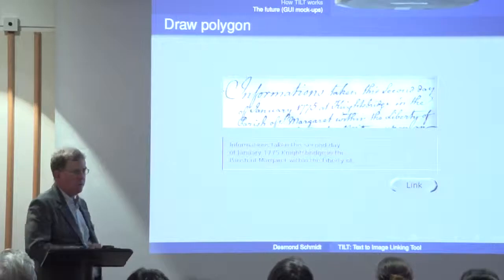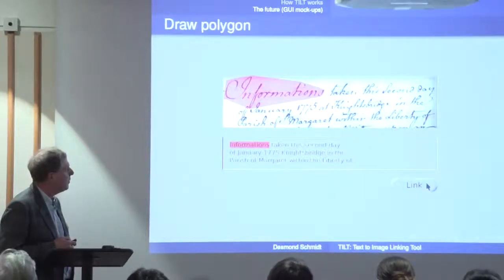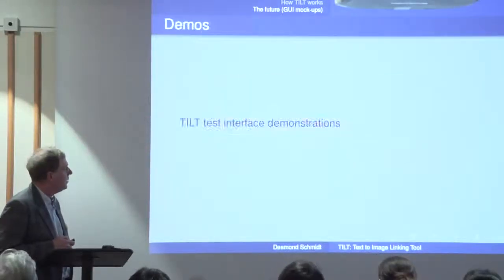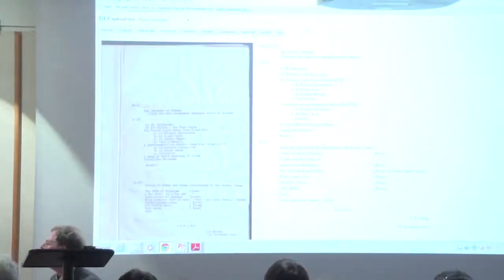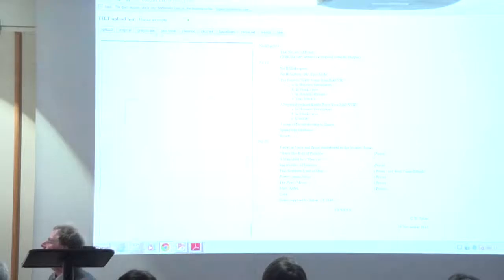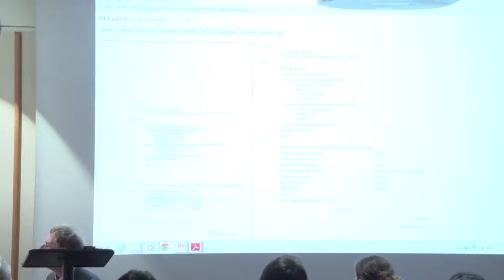If everything else fails, you've got the standard fallback of being able to draw a polygon around the word and manually link it — this is tedious but necessary in cases where nothing else works. Now I'll show a few demonstrations. This is a typescript going through the process — this is just a test interface, we don't have a full GUI, just the back end. The gradual reduction includes masking — which would be part of the GUI front end — and reduction to two-tone, plus cleaning to get rid of dirt.